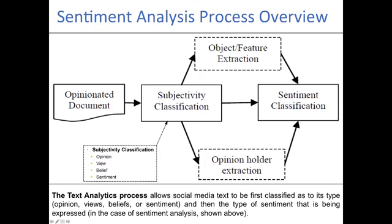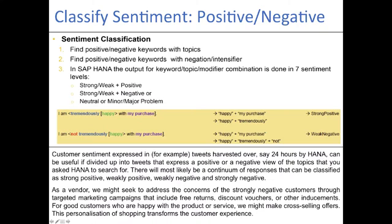Here is the sentiment analysis process overview: you have a document containing opinions, then subjectivity classification — looking at where opinions, views, beliefs, and sentiments are expressed. That feeds into object feature extraction and opinion holder extraction, which is used to classify sentiment. Sentiment classifications can also have levels: strong/weak positive, strong/weak negative, neutral, or minor/major problem, and an intensity score.